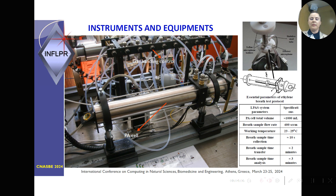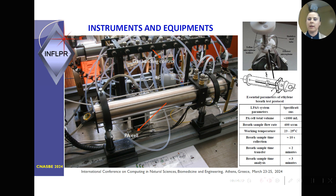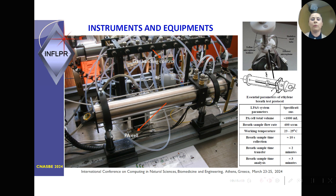Here I have a picture of the detector — the photoacoustic cell — and on the right part of the slide some parameters. We can observe that inside this photoacoustic cell is a resonator with four centered microphones that have the role to record and detect the signal. Other parameters of this photoacoustic cell: the total volume is 1000 milliliters, the breath sample flow rate is 600 standard cubic centimeters per minute, working temperature is room temperature, breath sample collection time is around 10 seconds, transfer time into the photoacoustic cell around two minutes, and analysis time around three minutes.